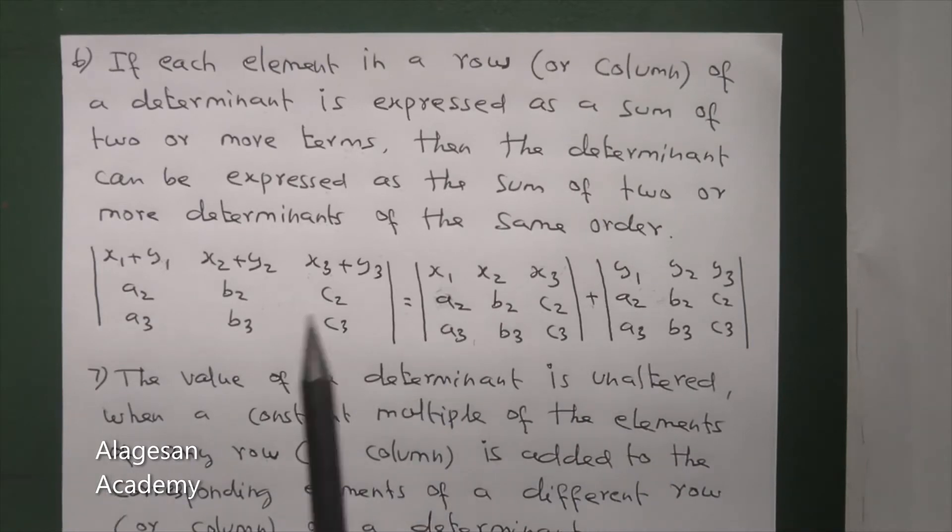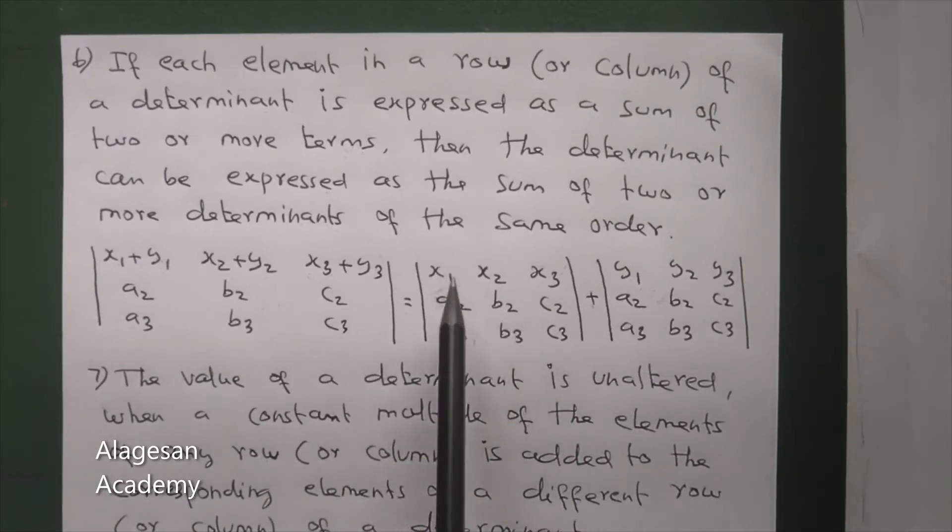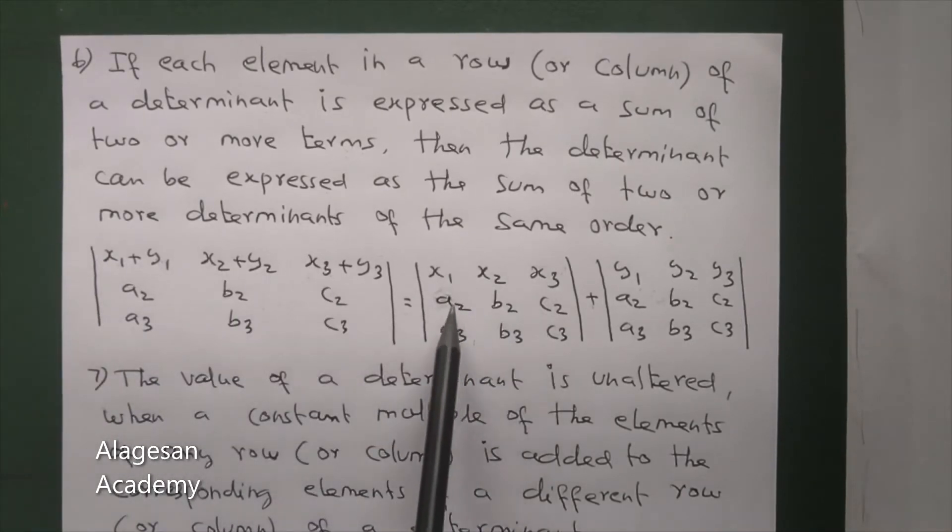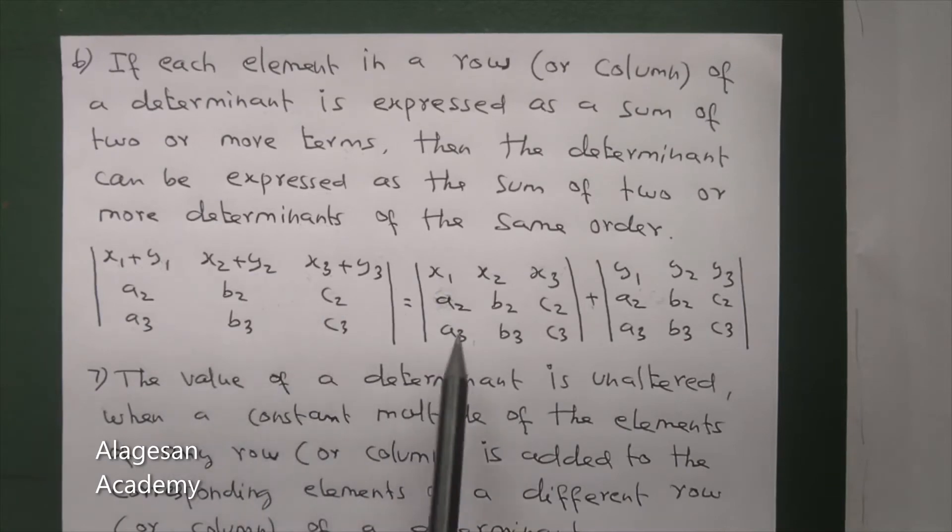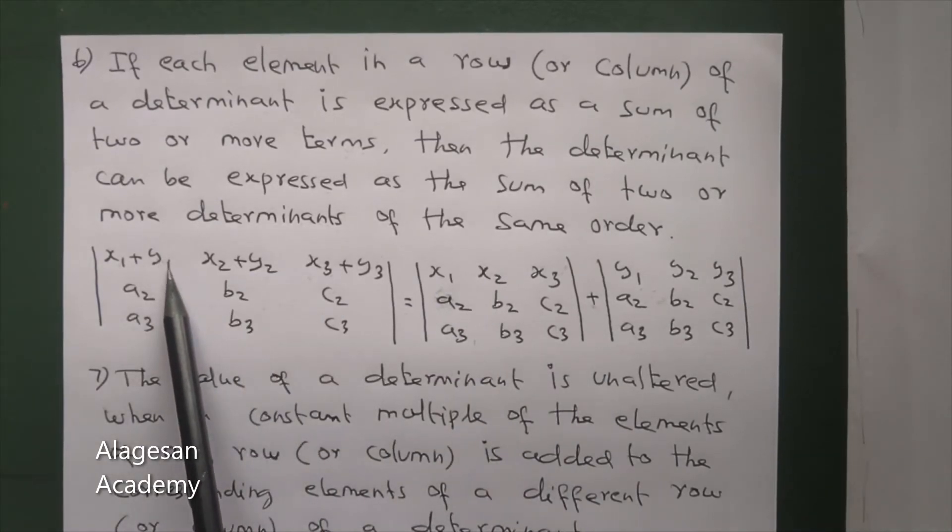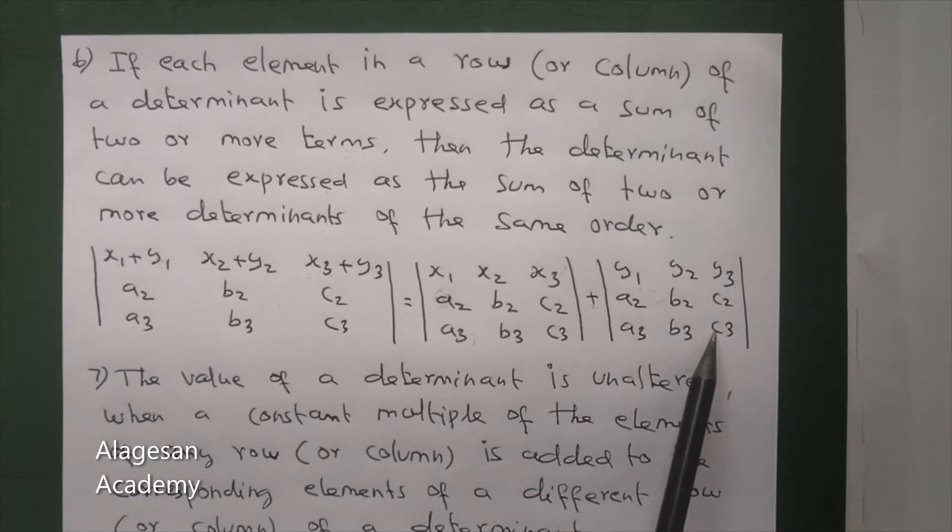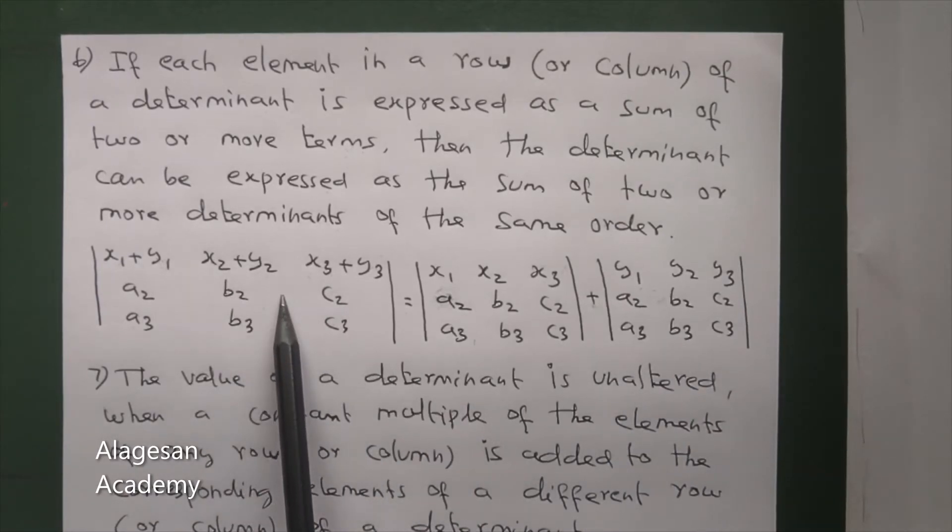So this can be written as sum of two determinants. In the first determinant, use the first row elements x1, x2, x3 for first row, second row same thing, third row same thing. Plus, the second elements y1, y2, y3 for first row, and the determinant's second row, third row are all the same thing.